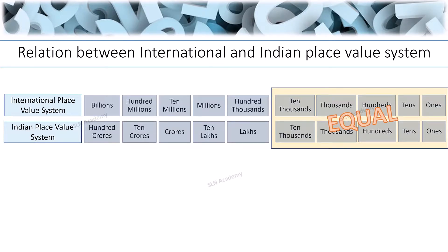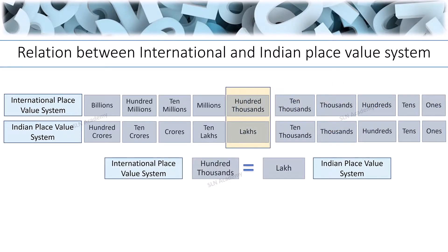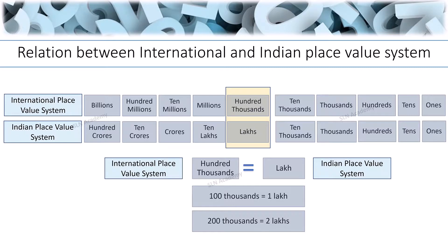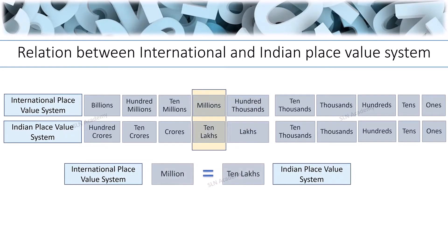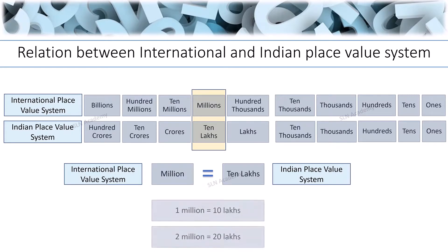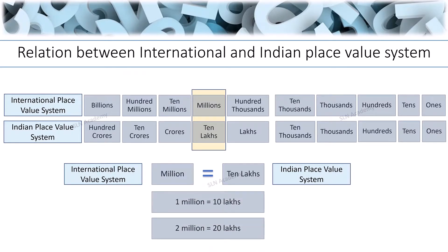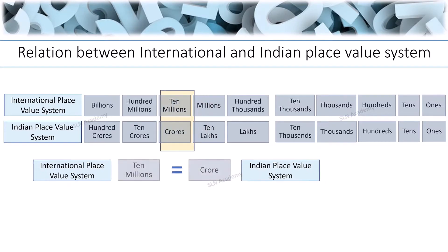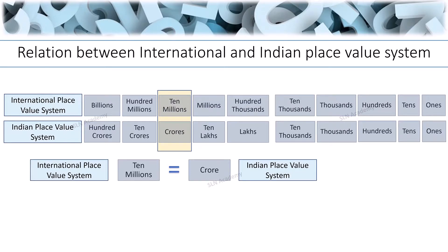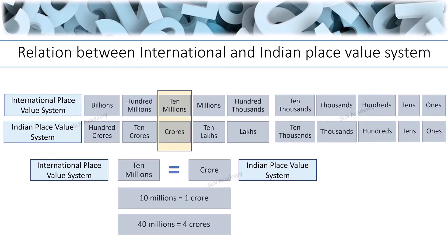Now let us have a look at the rest of the positions. The hundred thousands position in the international place value system is equal to the lakhs position in the Indian place value system — that means 100,000 equals 1 lakh, and 200,000 equals 2 lakhs. The millions position in the international system is equal to the 10 lakhs position in the Indian system.